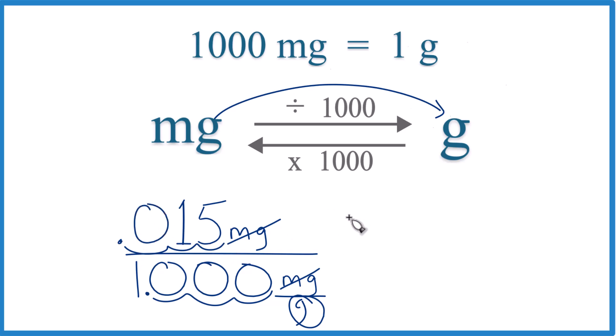And it turns out that 15 milligrams is equal to 0.015 grams.